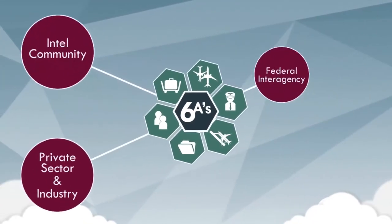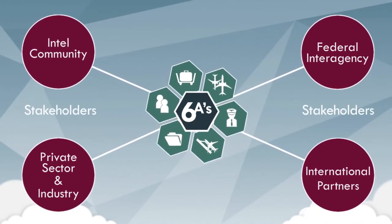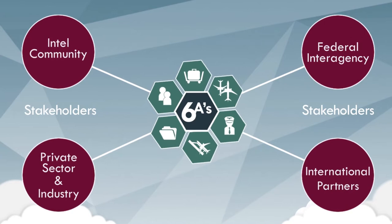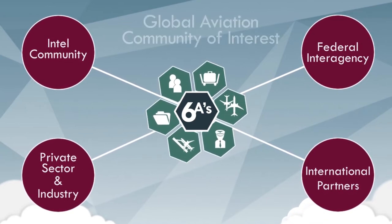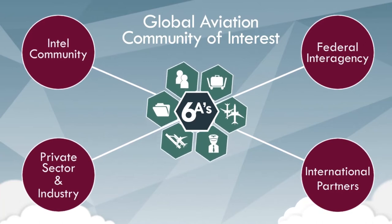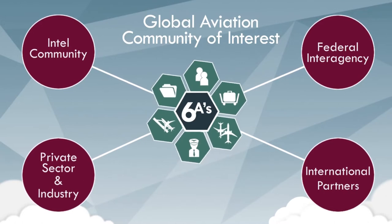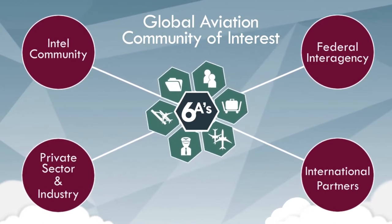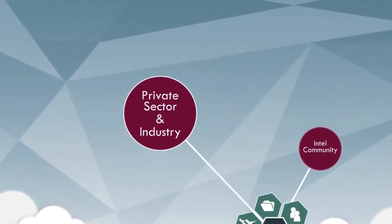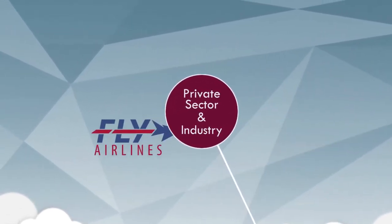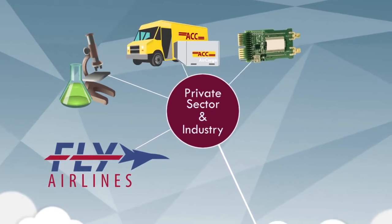Operating within the global aviation ecosystem are four primary stakeholders that facilitate the safety and security of the aviation domain. The stakeholders are known as the global aviation community of interest and are identified as federal interagency, intelligence community, private sector and industry, and international partners. The private sector and industry stakeholders are focused on airlines, research, technology, innovation, and supply chain management.